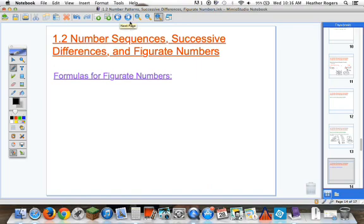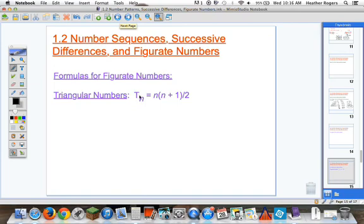Formulas for other figurate numbers. Triangular numbers: I use T sub N to represent the triangular number. The formula is N times (N plus 1) over 2—actually the same as Gauss's formula. The first triangle, when N is 1, is just a point. So 1 times (1 plus 1): that's 1 times 2, which is 2, divided by 2, equals 1.